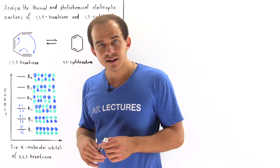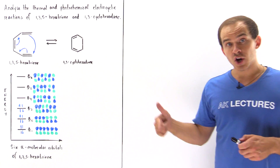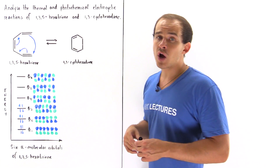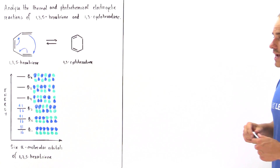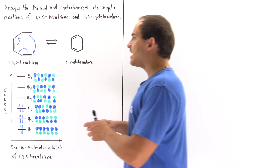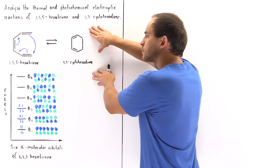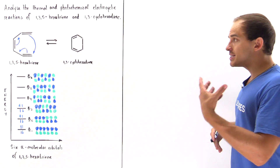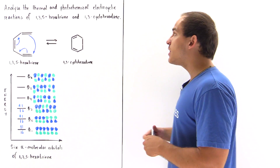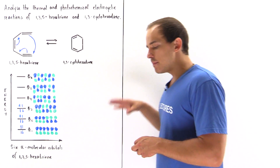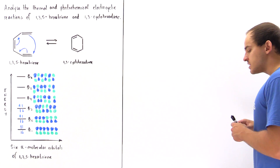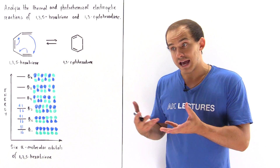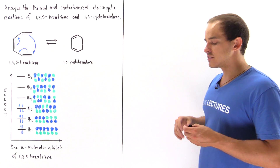We want to analyze the photochemical and the thermal electrocyclic reaction between 1,3,5-hexatriene and 1,3-cyclohexadiene. We begin with 1,3,5-hexatriene as our reactant and form 1,3-cyclohexadiene as the product — this reaction is an electrocyclic reaction. We want to analyze the thermal and the photochemical versions, but first let's analyze the molecular orbitals of 1,3,5-hexatriene.